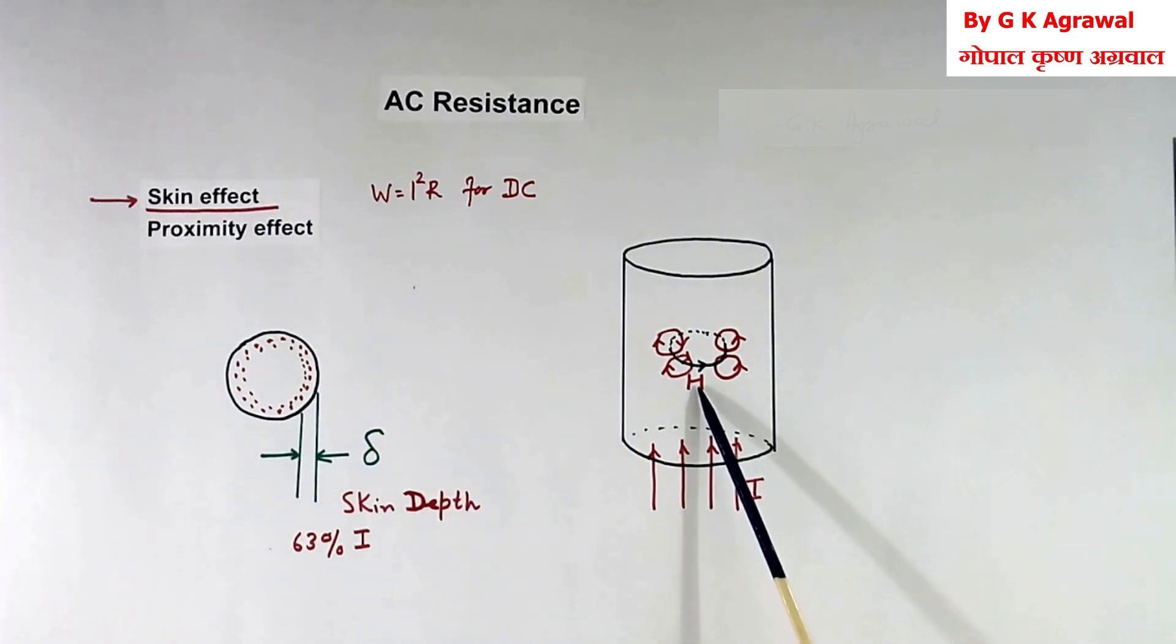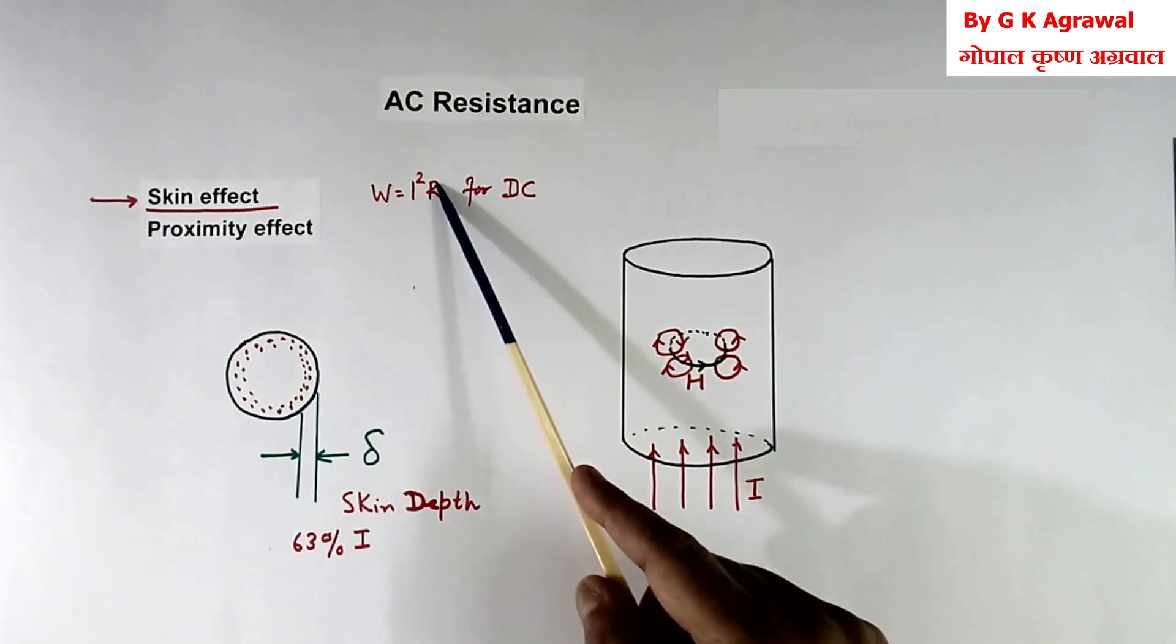Because of induced EMF, current electron has shifted outside. So because current is not flowing in the full area, resistance of the wire will be more.